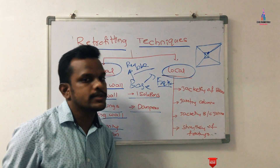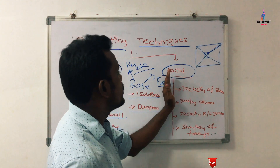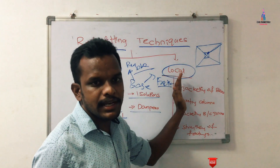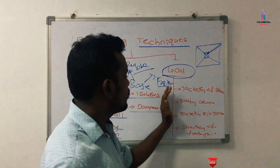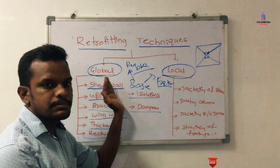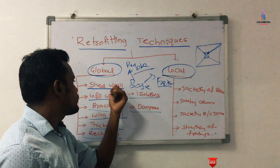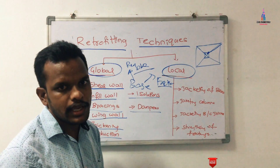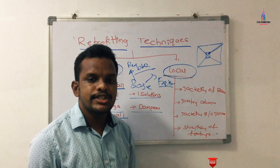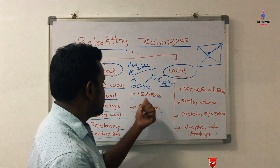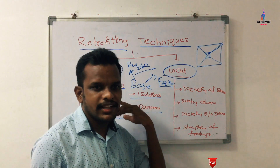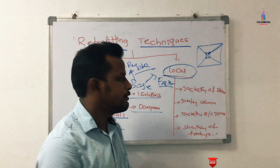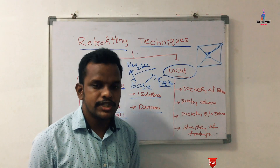Now I will explain the different techniques under the local retrofication process. This is one of the most important techniques and most people follow it for low-rise and medium-rise buildings. For high-rise buildings, the global methods — shear wall, infill wall, bracing system, wing wall, reduction, isolation, and dampers — are followed. For low-rise and medium-rise buildings, techniques like shear wall and thickening are not mandatory.